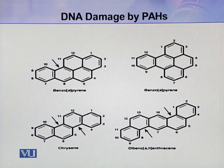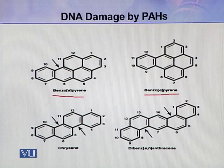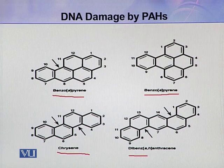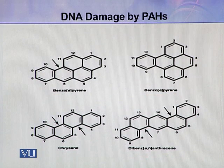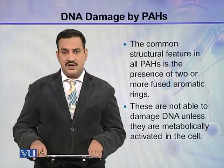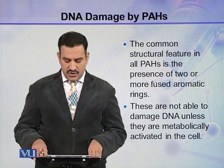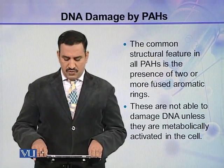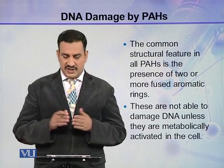Some examples of PAH include benzopyrene, chrysene, and dibenzanthracene. These are examples of polycyclic aromatic hydrocarbons which can damage DNA. The common structural feature in all polycyclic aromatic hydrocarbons is the presence of two or more fused aromatic rings.